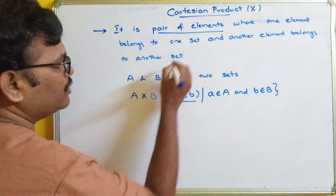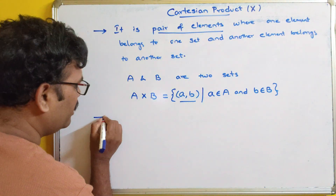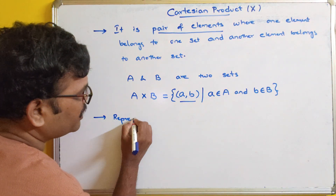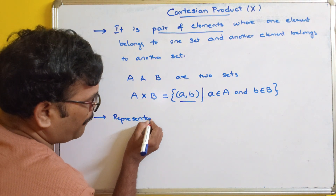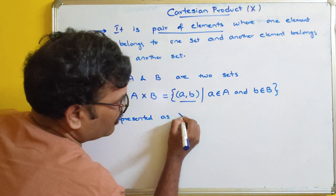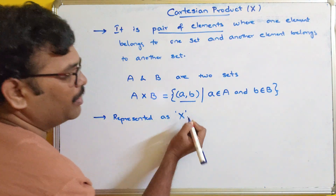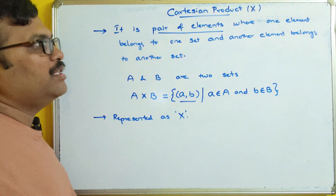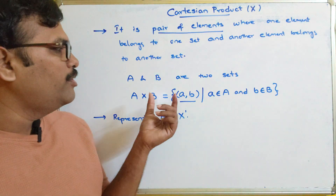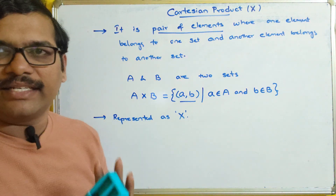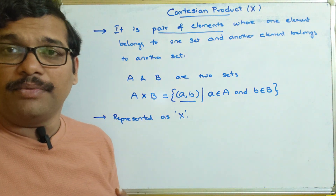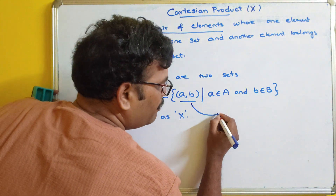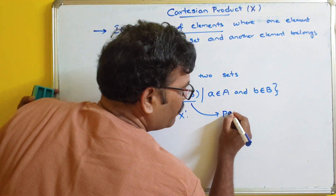The representation, once again: the Cartesian product is represented with the cross symbol. This Cartesian product is applied on two different sets. Now let us see an example. This (a, b) is called a pair of elements.